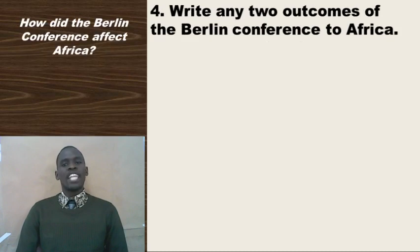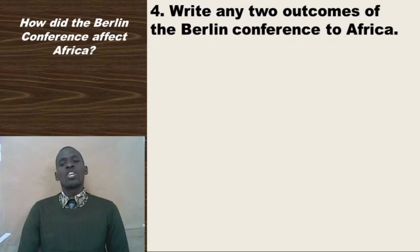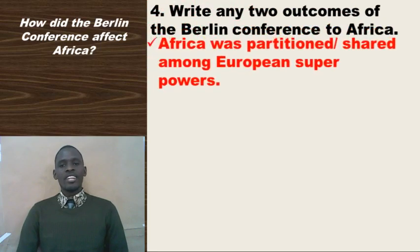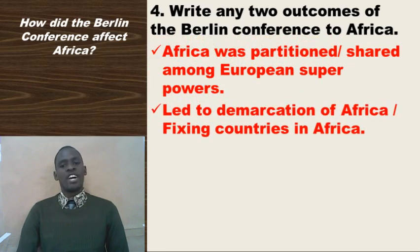Question four asks you to write two outcomes of the Berlin Conference for Africa — that is, the consequences, repercussions, effects, or results. You can also ask: how did the Berlin Conference affect Africa? One, Africa was partitioned or shared among European superpowers. Two, it led to demarcation of Africa, or boundary fixing in Africa.